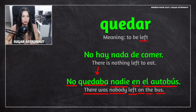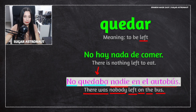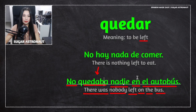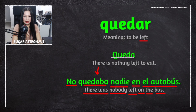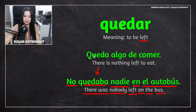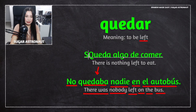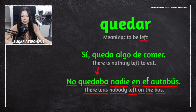'No quedaba nadie en el autobús' — there was nobody left on the bus. Both examples we've looked at were negative. You can also have positive ones. For example, we asked '¿Queda algo de comer?' — is there anything left to eat? And you can answer: 'Sí, queda algo de comer' — yes, there's something left to eat. The question and answer are almost the same; the intonation changes and we add 'sí' meaning yes.